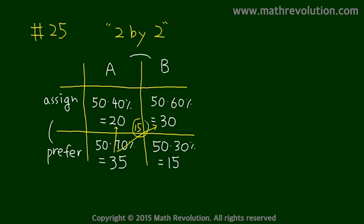So 15 people who preferred to be in team A went to team B. And 20 who preferred to be in team A did go to team A.